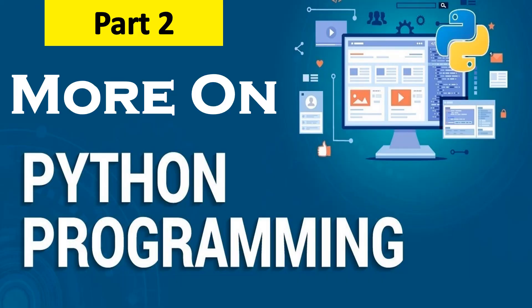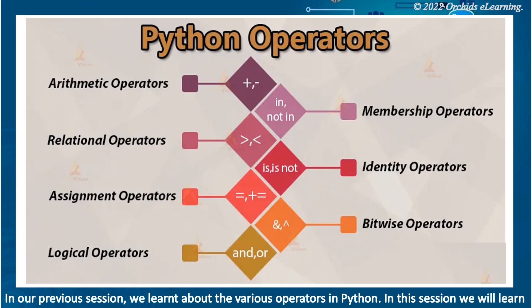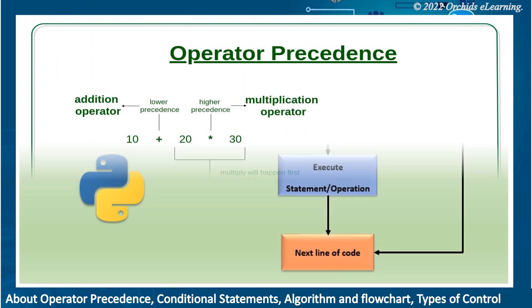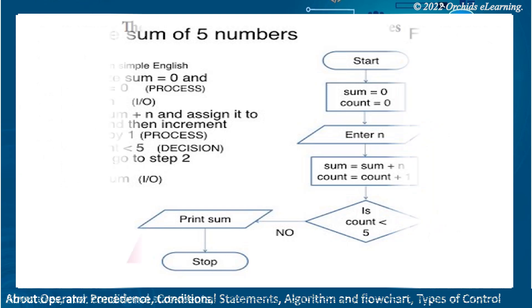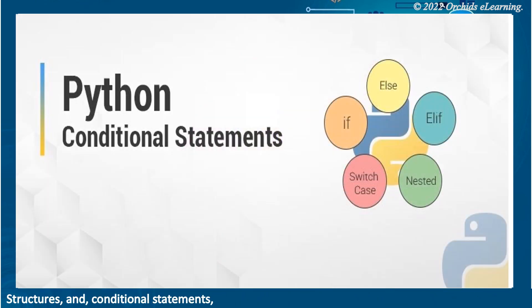Welcome to Python Part 2, Class 6. In our previous session we learned about the various operators in Python. In this session we will learn about operator precedence, conditional statements, algorithm and flowchart, types of control structures, and conditional statements.